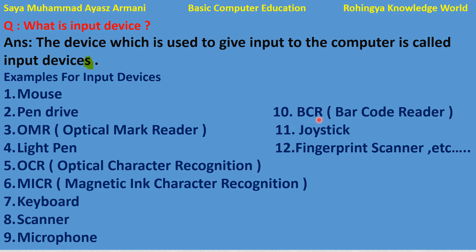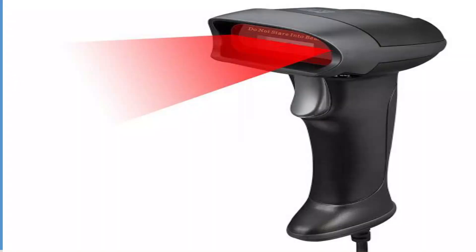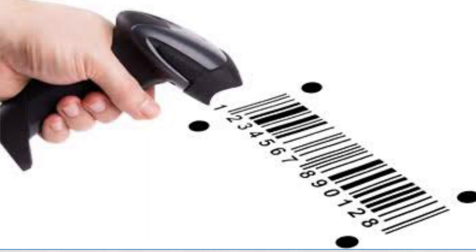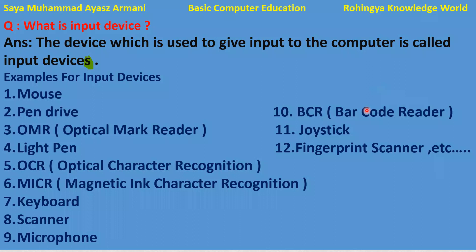Another input device is the barcode reader. A barcode reader is used to read barcodes. For example, in a supermarket, products have barcodes on them, and the barcode reader scans and reads the numbers from those barcodes.